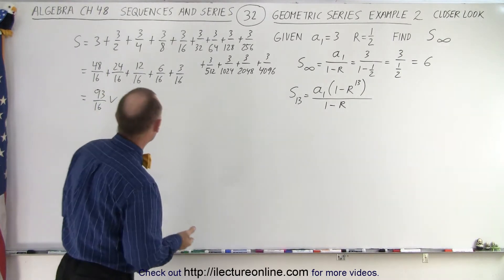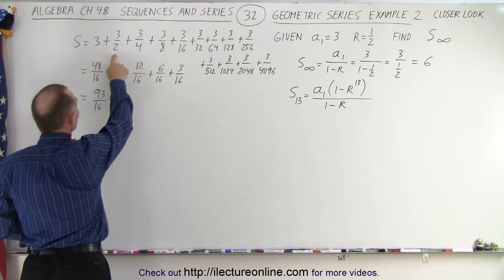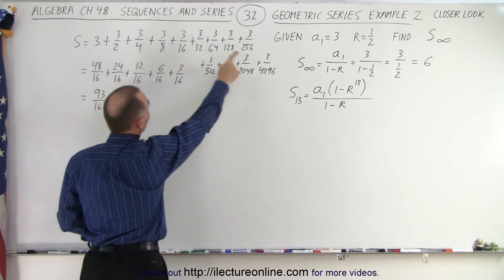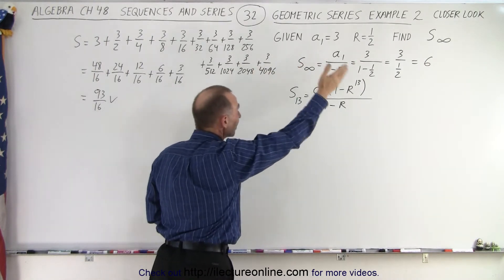Well that's what happened when we had the sum of 3 plus 3 over 2 plus 3 over 4 plus 3 over 8 plus 3 over 16 all the way out to 3 over 4096 and on and on.